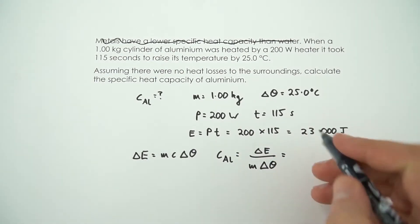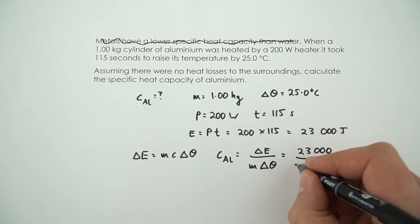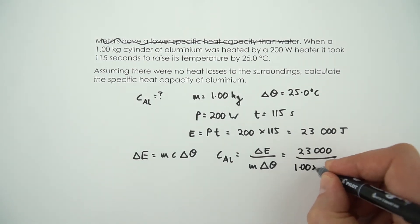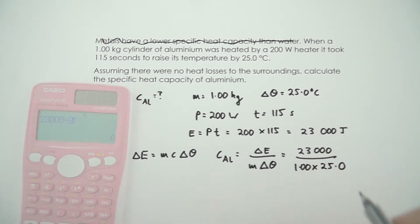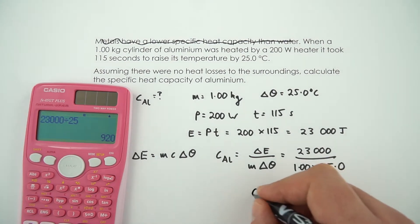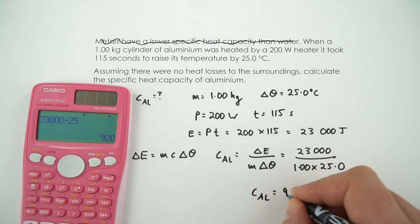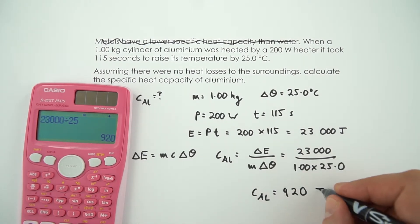Now we've just worked out the energy up here, so that's 23,000 divided by the mass, which is 1.00 times 25.0, the change in temperature. And this then gives an answer equal to 920. And the tricky bit here is trying to remember the units for this. And this is measured in joules per kilogram per degree Celsius.